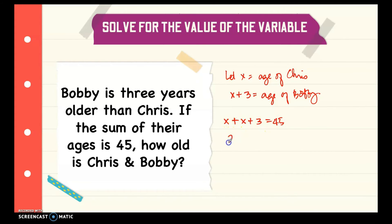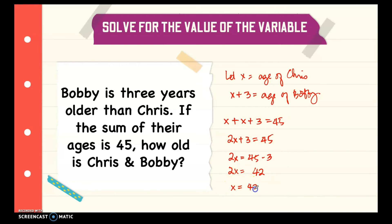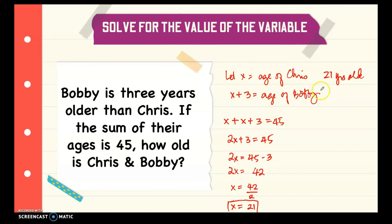Combining like terms gives 2x plus 3 equals 45. Transposing 3 gives 2x equals 42. Dividing by 2 gives x equals 21. So Chris is 21 years old. Bobby is 3 years older, so 21 plus 3 equals 24 years old. Let's check: 21 plus 24 equals 45, so the sum of their ages is 45 and our answer is correct.